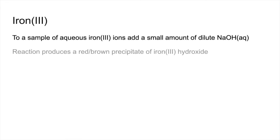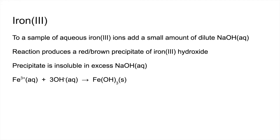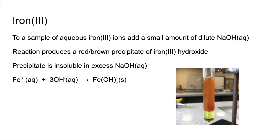Iron-3 now — same procedure. We get a red-brown precipitate of iron-3 hydroxide, which is insoluble in excess sodium hydroxide. This is essentially the colour you've already seen in the previous photo. Here's the equation and the actual photo of the experiment.